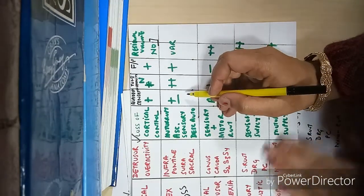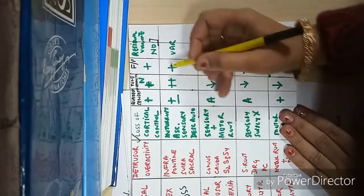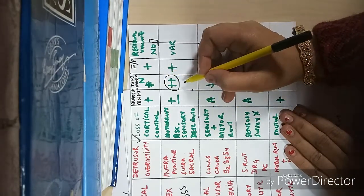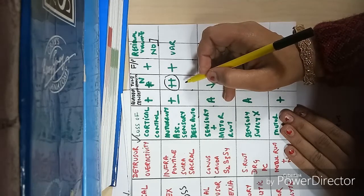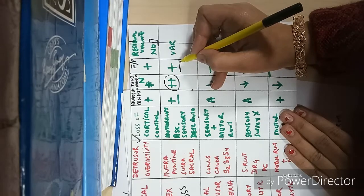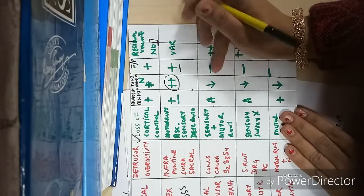Bladder sensation may or may not be present, and bladder tone is increased. There will be a small spastic bladder with frequency and precipitancy present, and residual volume will be variable.